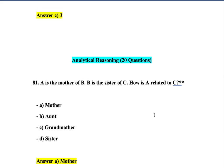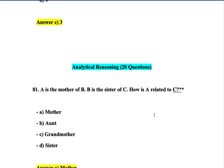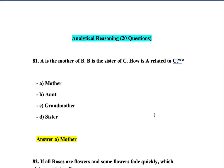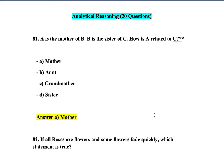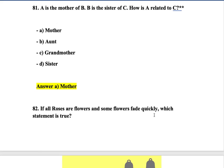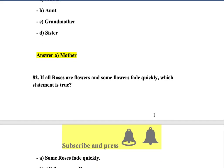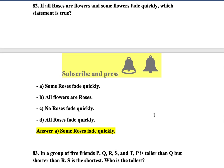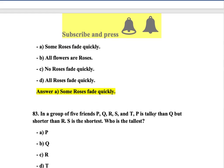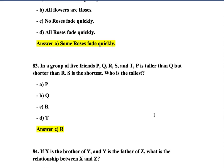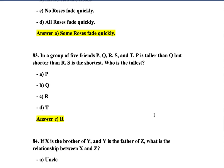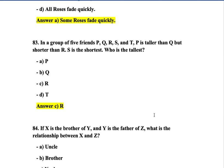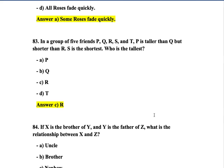Now the third section is analytical reasoning — it has 20 questions starting from question 81. Question 81: A is the mother of B; B is the sister of C — how is A related to C? The correct answer is mother — option A. Question 82: If all roses are flowers and some flowers are red, which statement is true? Option A is correct: some roses are red. Question 83: In a group of five friends P, Q, R, S, and T — P is taller than Q but shorter than R; S is the shortest — who is the tallest? R is the tallest.